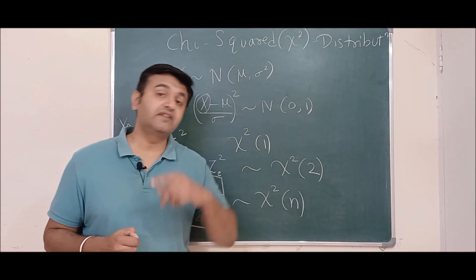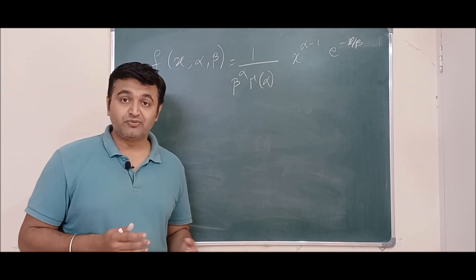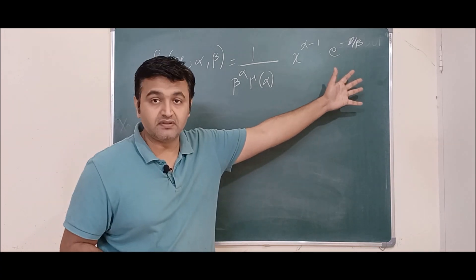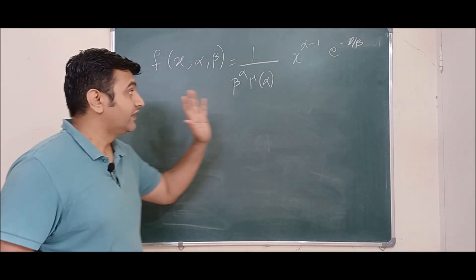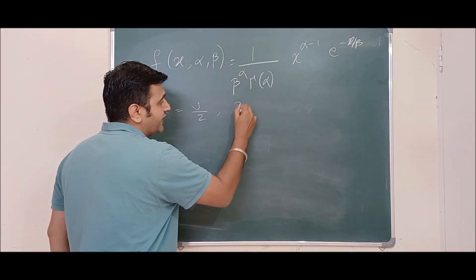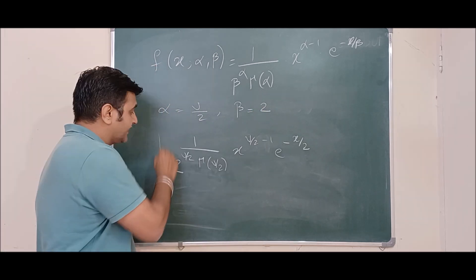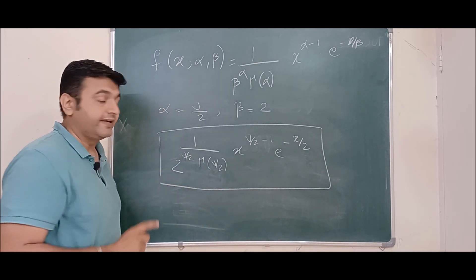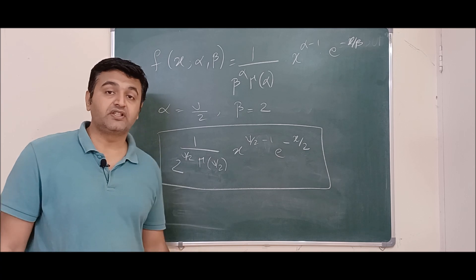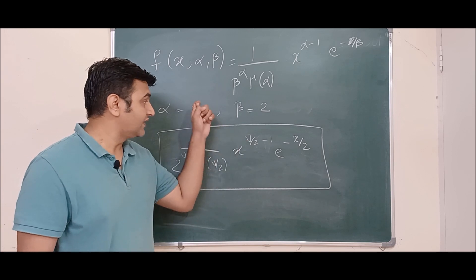To find the PDF, one must revisit the gamma distribution. A random variable X is said to follow gamma distribution if its PDF has a specific form for x greater than or equal to 0, and 0 for x negative. If we replace alpha by nu over 2 and beta by 2 in the gamma PDF, we get the chi-square PDF. We say a random variable follows chi-square distribution if it has this probability density function, where nu is called the degree of freedom.